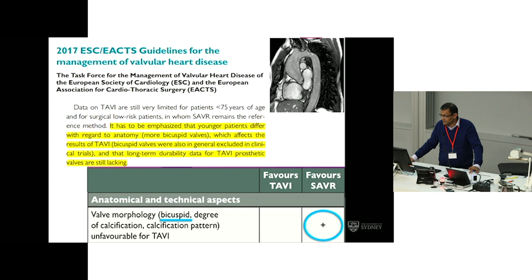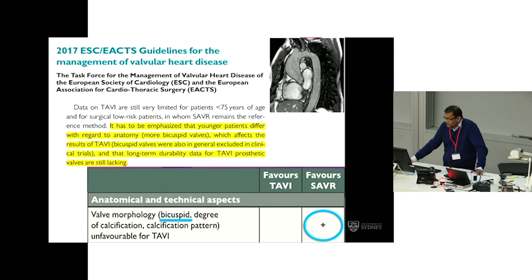I think it's important to reiterate at the outset that in the context of intervention for bicuspid valve, surgery by and large is the optimal treatment strategy unless there is a significant contraindication to it. It's worthwhile noting that with all of the TAVI literature we've been discussing, most bicuspid patients were excluded from the major randomised trials.